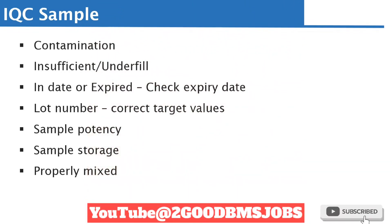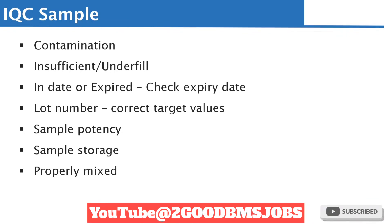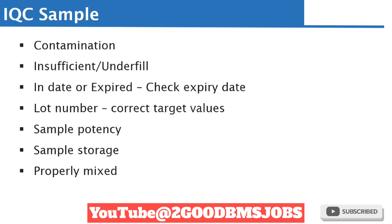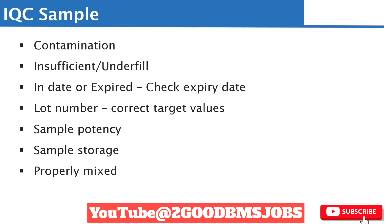We are going to look at each factor individually. When it comes to the internal quality control sample, factors that could lead to failure include contamination — if it is contaminated you may need to get another vial — or insufficient sample volume, in which case you get another control sample. Another thing to check is whether the sample is in date or has expired; if expired, you discard it and get another control sample.